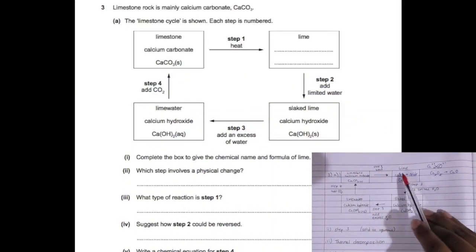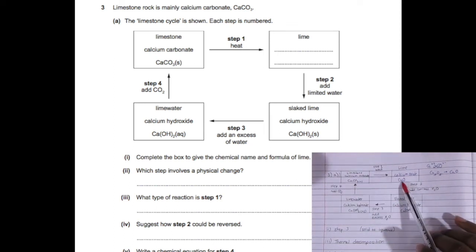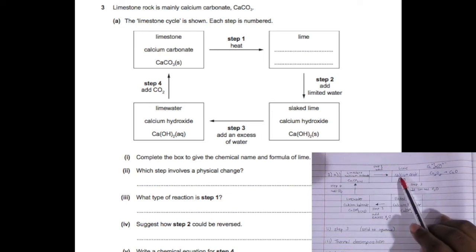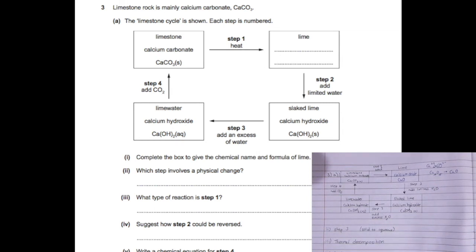For question three, limestone rock is mainly calcium carbonate. We're supposed to complete the box to give the chemical name and formula of lime. When limestone is heated, it turns into lime. When you thermally decompose carbonates, you get the metal oxide and carbon dioxide. So that would be calcium oxide. Calcium has oxidation state of two plus, oxygen of two minus. The oxidation states cross out because it's a one-to-one ratio.